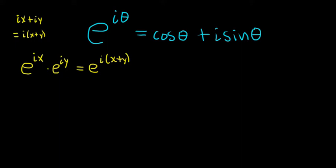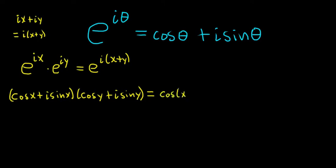So now we can use Euler's formula. On the left-hand side, we have e to the ix, that'll be cosine x plus i sine x. And then here we have cosine y plus i sine y. That's e to the iy. And that's equal to the right-hand side, which is cosine of x plus y plus i sine of x plus y.